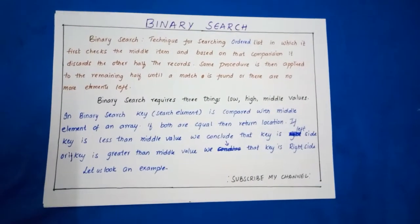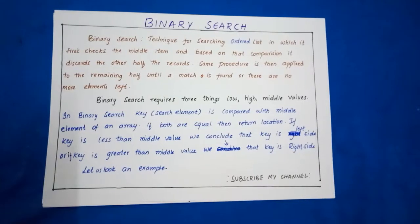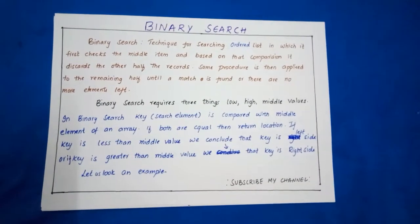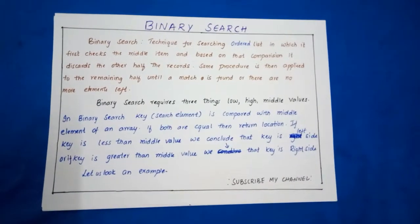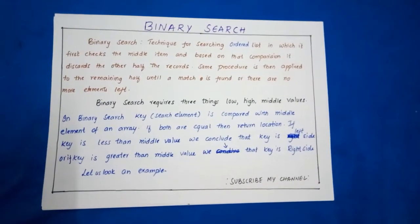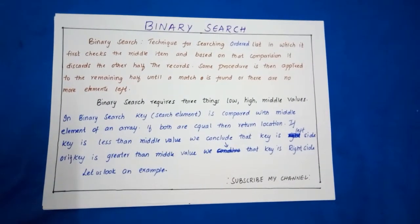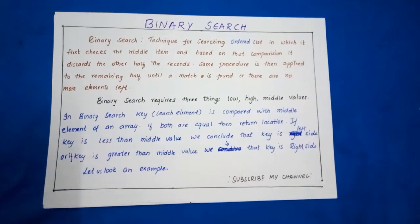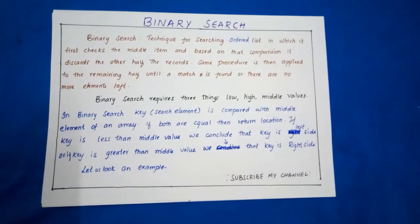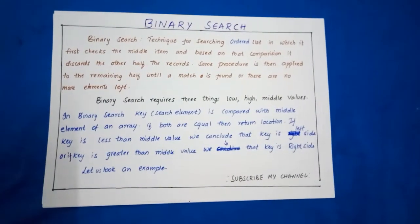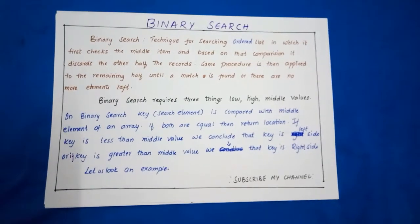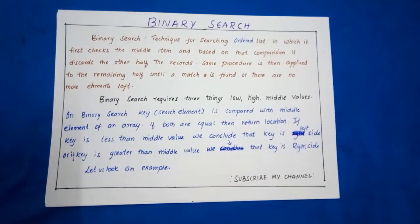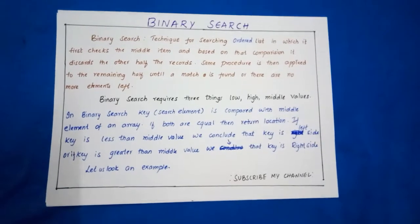If the key and the middle value of an array are the same, then we return the location of the middle value. Otherwise we conclude that the element we are going to search may be in the left side of the array or the right side of the array. In binary search, we are interested in knowing what is the low value, what is the high value, and what is the middle value. Based upon these three values, we will find the search element.